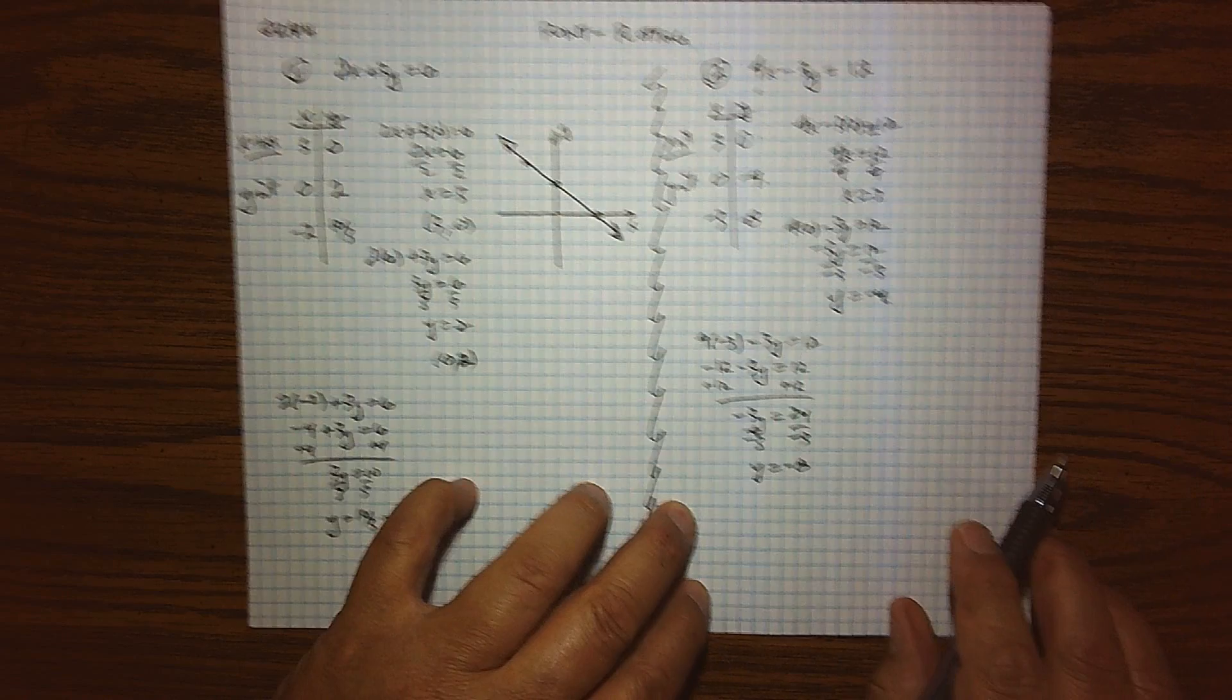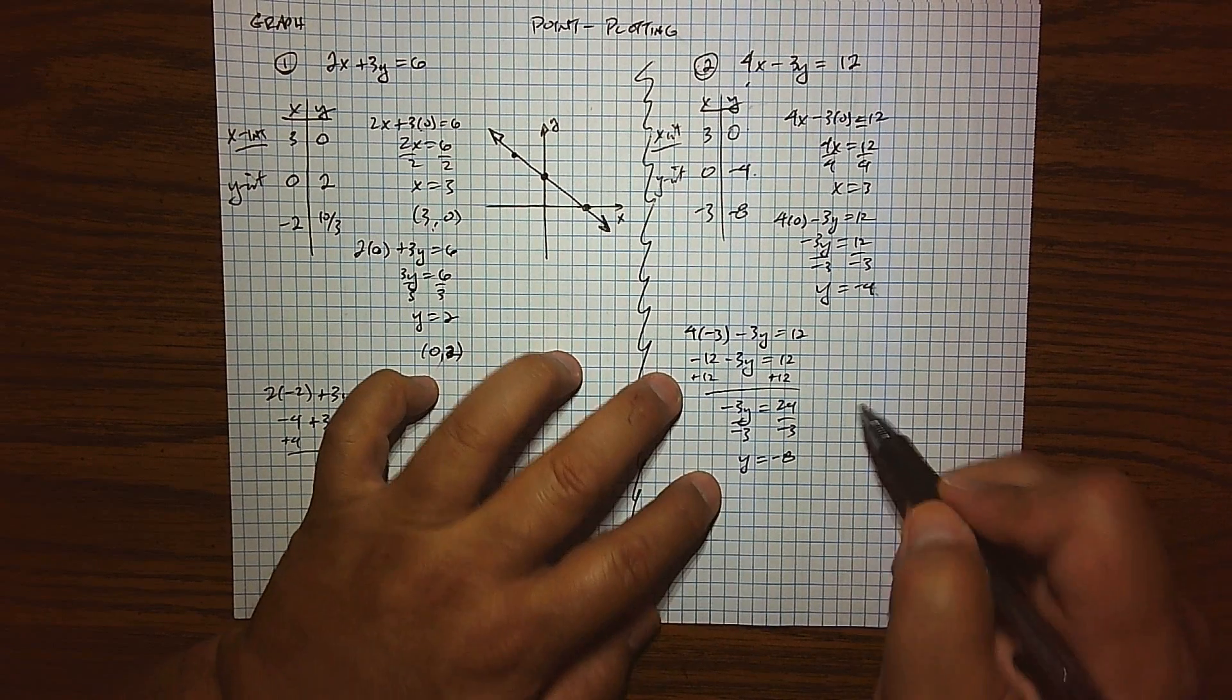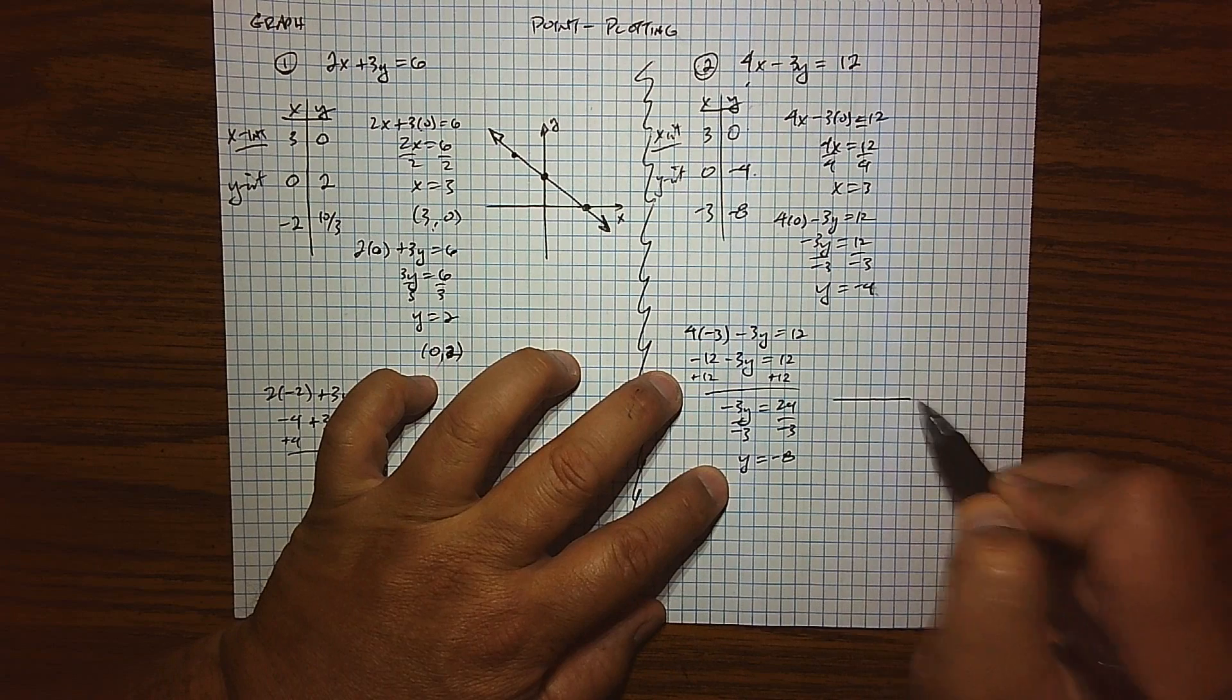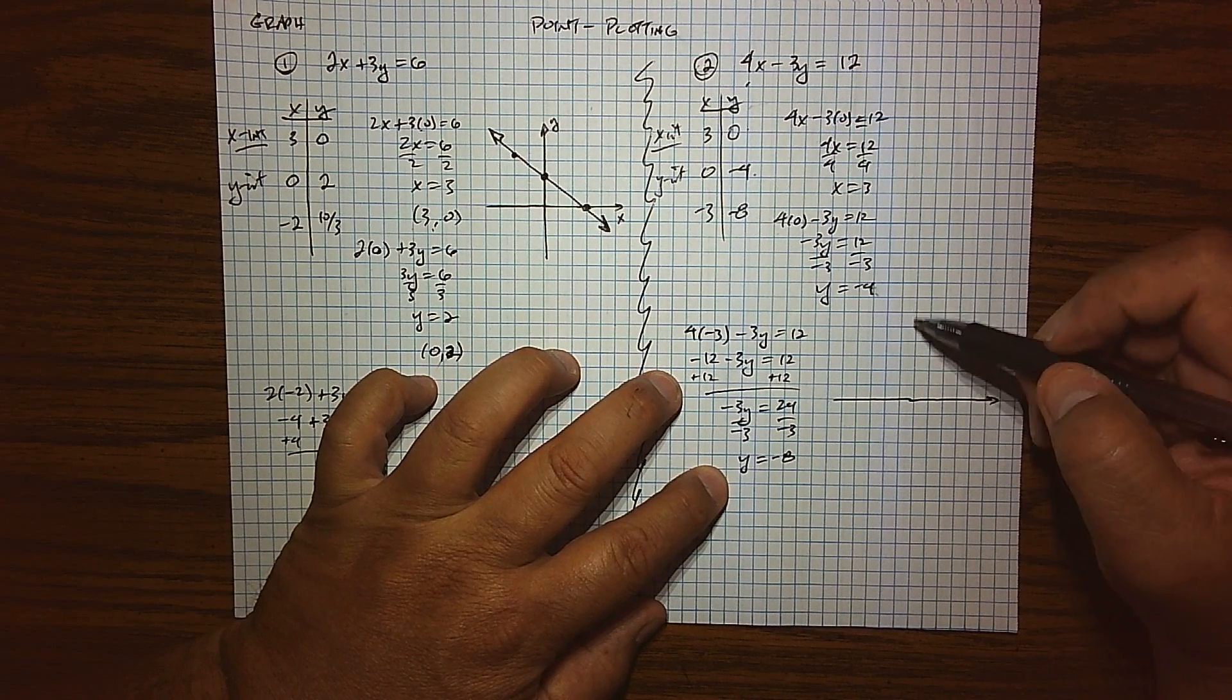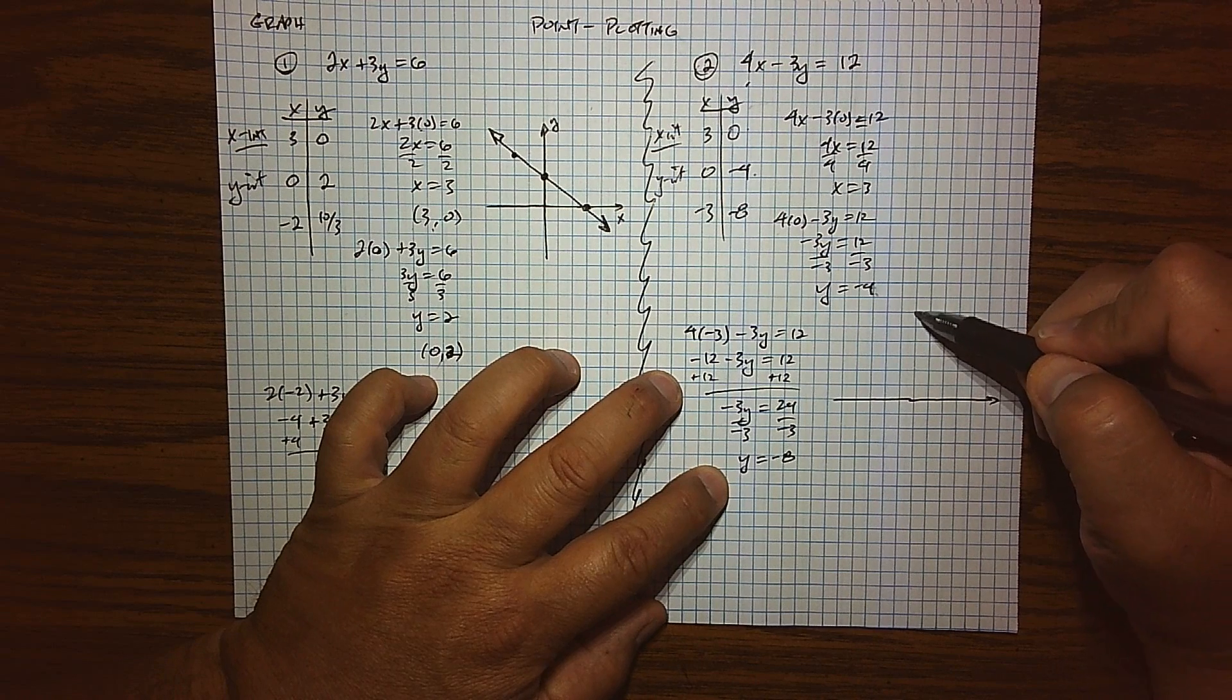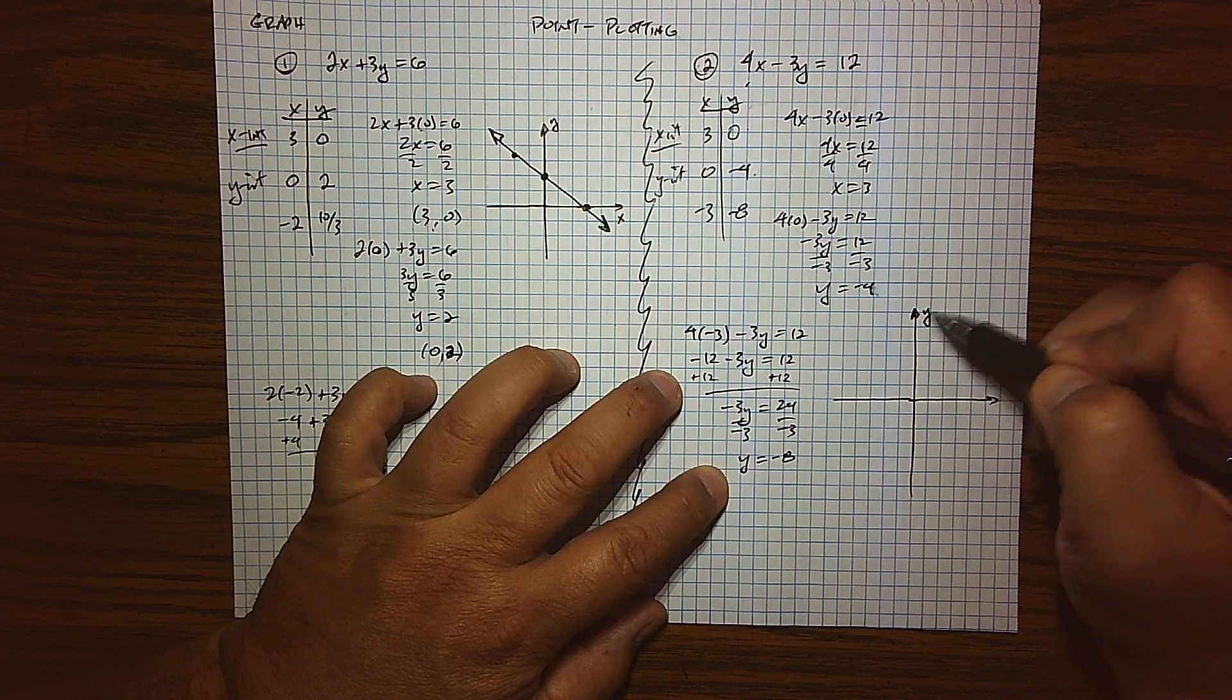So we've generated three data points. We know there's an infinite number of them, but rather than trying to find each one, because there's not enough time to do it, what we'll do is we'll graph the ones that I got. So I'll put a nice little x and y-axis together. There's my y-axis, there's my x.